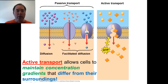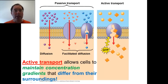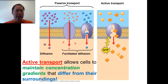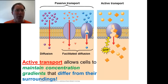We've talked about diffusion, osmosis, and facilitated diffusion — we'll talk about those in class. These do not take any energy; they are passive. Active transport is over here on the right-hand side. This is important because it allows cells to maintain concentration gradients that are kind of abnormal or unnatural.